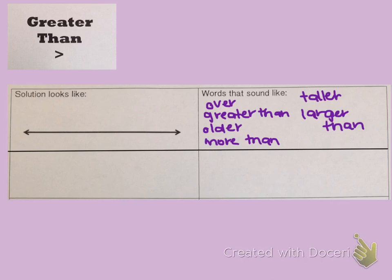When you represent an inequality on a number line for greater than, you're going to put an open dot on the number and then draw an arrow to the right all the way up to the end of your number line. So this is what a greater than solution would look like on a number line.